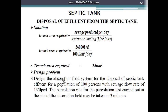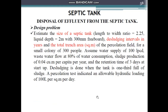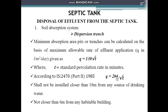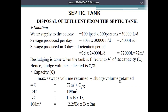The next problem: design the absorption field system for disposal of septic tank effluent for a population of 100 people with a sewage flow rate of 135 liters per capita per day. The percolation rate from the percolation test carried out at the site is 3 minutes. You are supposed to solve this problem on your own; you can refer to the SK Garg book. The hint is to use the relevant formula for calculation.